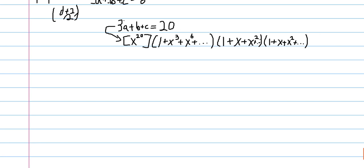We have a multiple of 3 here, and we're representing our multiples of 3 by polynomial terms with their power being divisible by 3. So this is x to the 0, and we have x cubed, x to the 6, and so on.